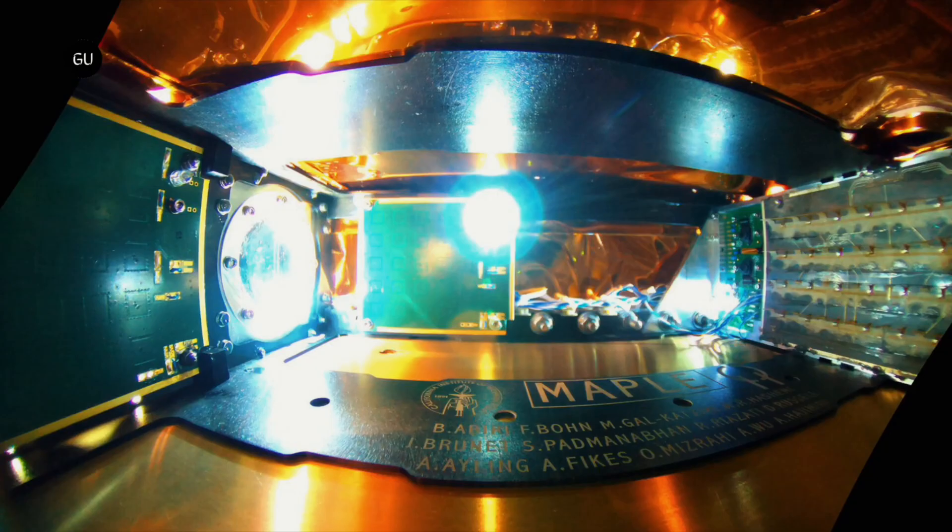MAPLE also has a small window through which the array can beam the energy. The transmitter array in the prototype uses timing control elements to focus the power dynamically on the desired location.